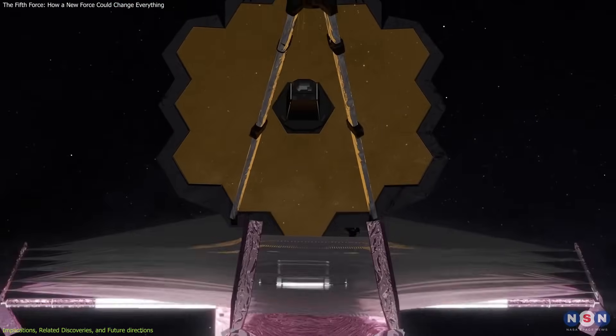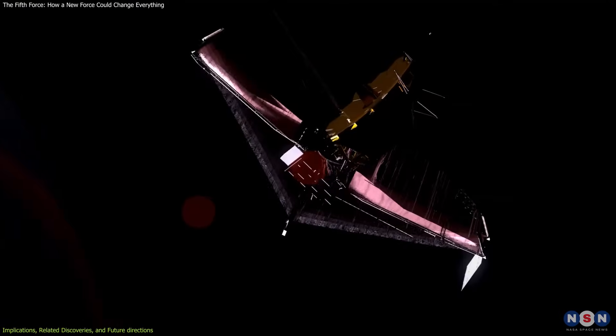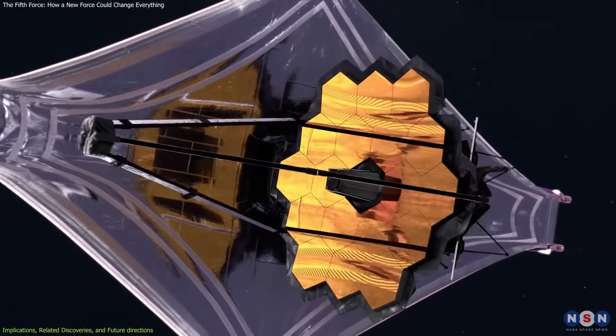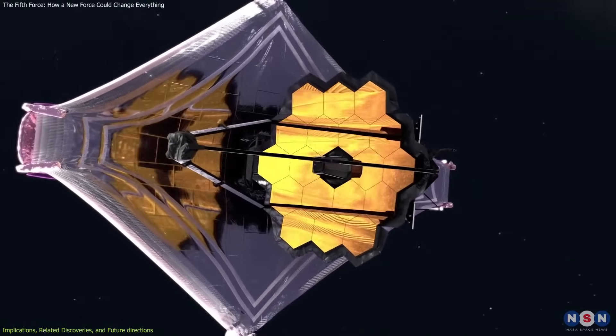Similarly, the James Webb Space Telescope, with its unparalleled ability to observe distant galaxies and gravitational lensing effects, provides another avenue to detect subtle deviations indicative of new physics.